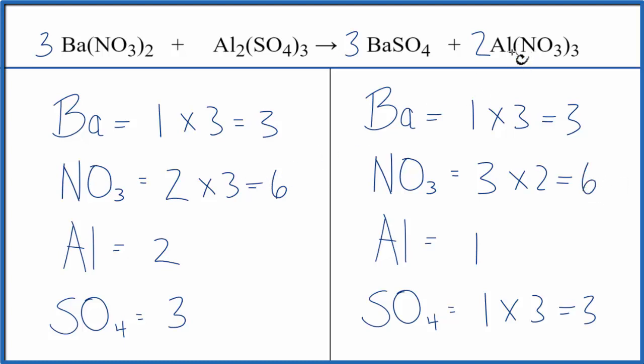So those are balanced. And then one aluminum times two. That works. And those are balanced. And we're done. This equation is balanced.